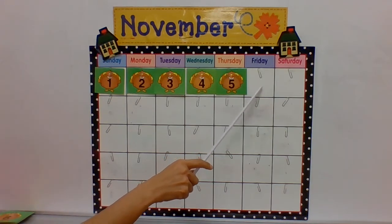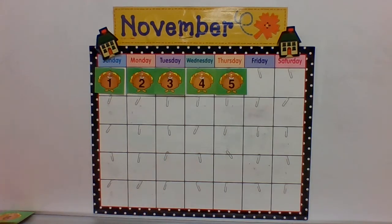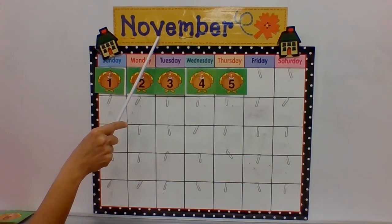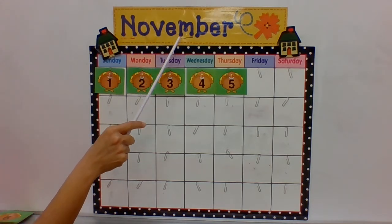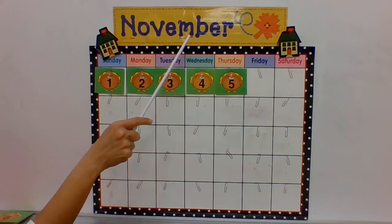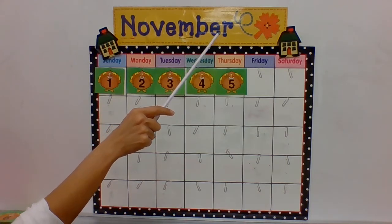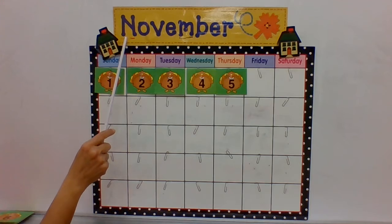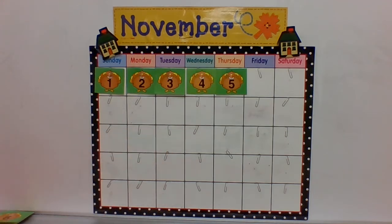What number will be here? Ready — let's spell November. Please say the letters with me: N, O, V, E, M, B, E, R. That spells November! That's the name of the month.